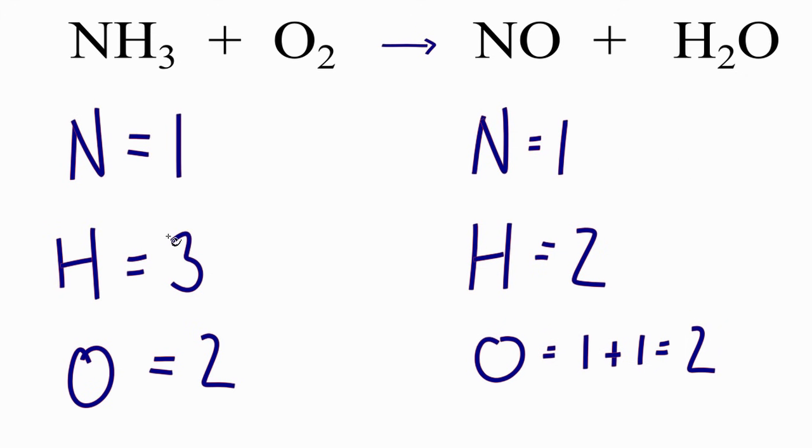Whenever I have an odd number like three, I like to get that to be an even number. And I do that by multiplying by two. Three times two, that gives me six. So up above, I will put a two here.